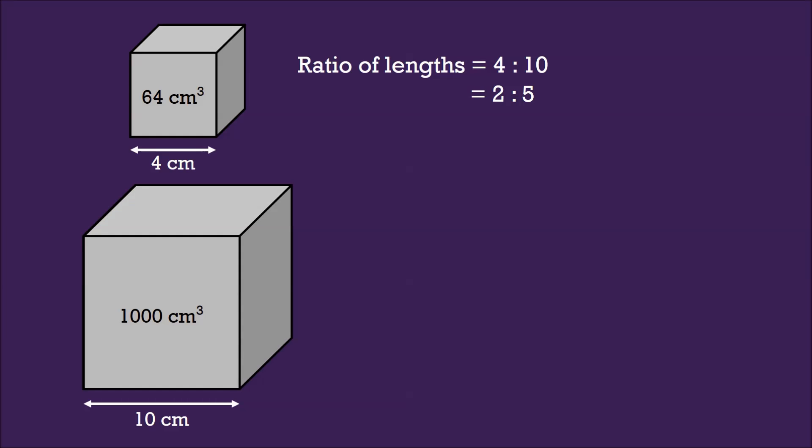Now how about the ratio of their volumes? Yes, the ratio of their volumes would be 64:1000. Now let's simplify this, divide by 8 on both sides, we have 8:125.